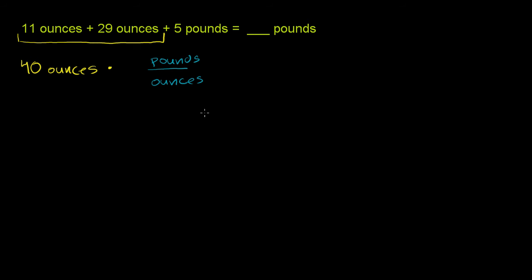And we know already that there are 16 ounces per pound. So there are 16 ounces per 1 pound, or you could say there's 1 pound for every 16 ounces. Either way, if you multiply these two quantities, the ounces cancel out.